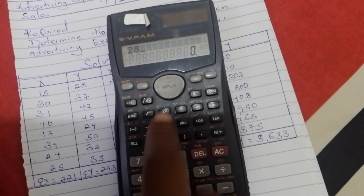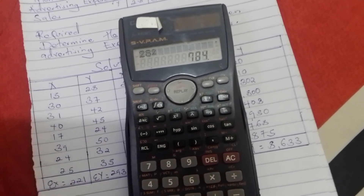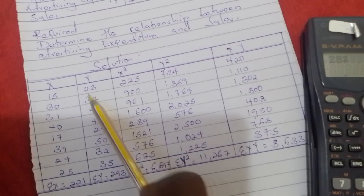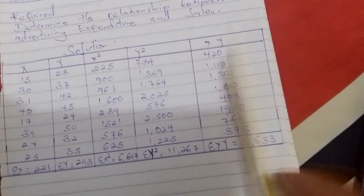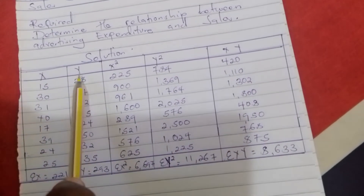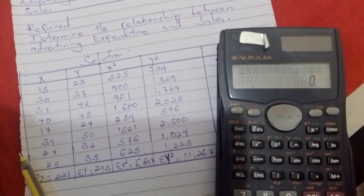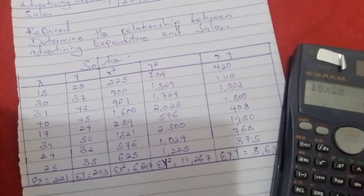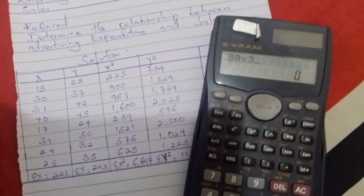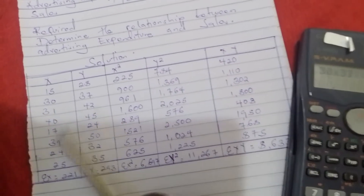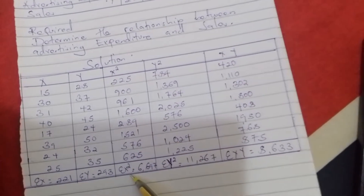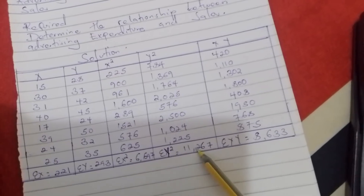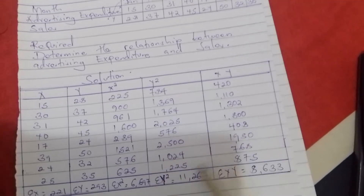We do the same for the rest of the y values. Then we calculate xy — it is simply x times y. The first one is 15 times 28, which is 420. The next one is 30 times 37, and we do the same for the rest of the figures. After that, we add the x squared column to get summation x squared, add the y squared column to get summation y squared, and add the xy column to get summation xy. Then we substitute into our formula to get the relationship.